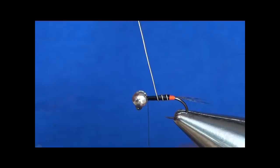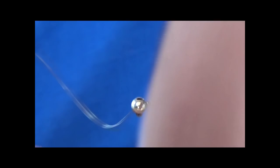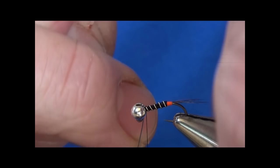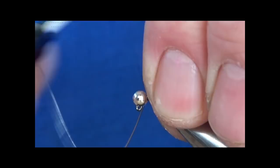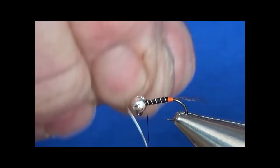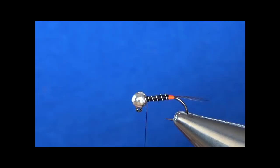I'm going to just tie it off there. So you can tie this fly anything from a size 22 right up to a 4mm. Have a good range of them in your box because they're absolutely the bread and butter of nymph fishing at the moment really, and have been for the last couple of years.